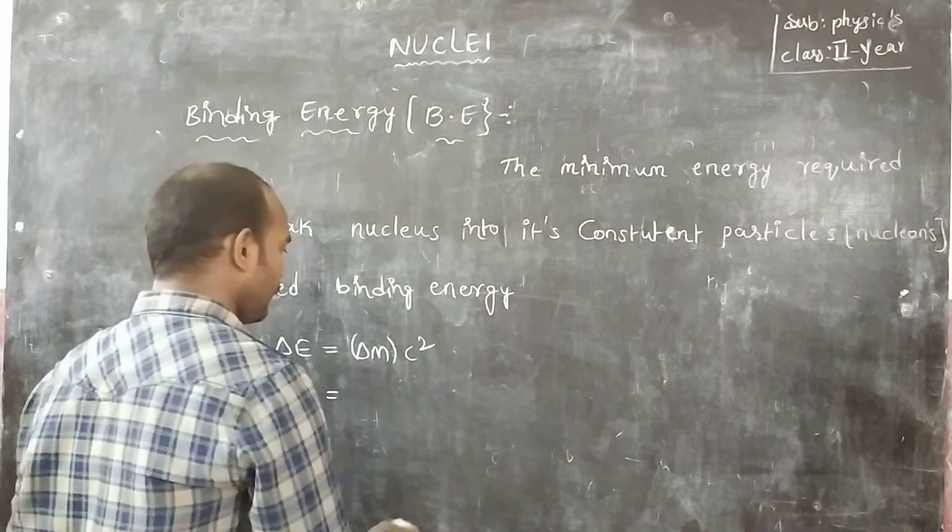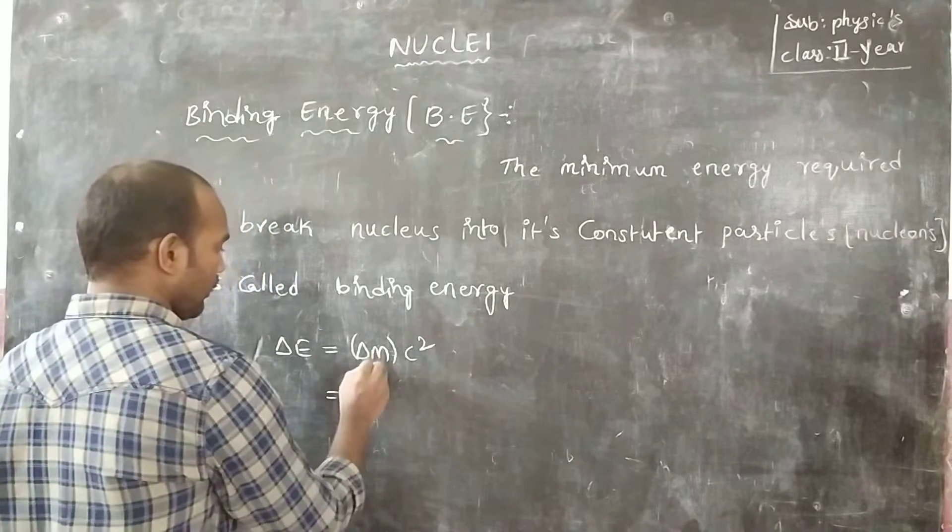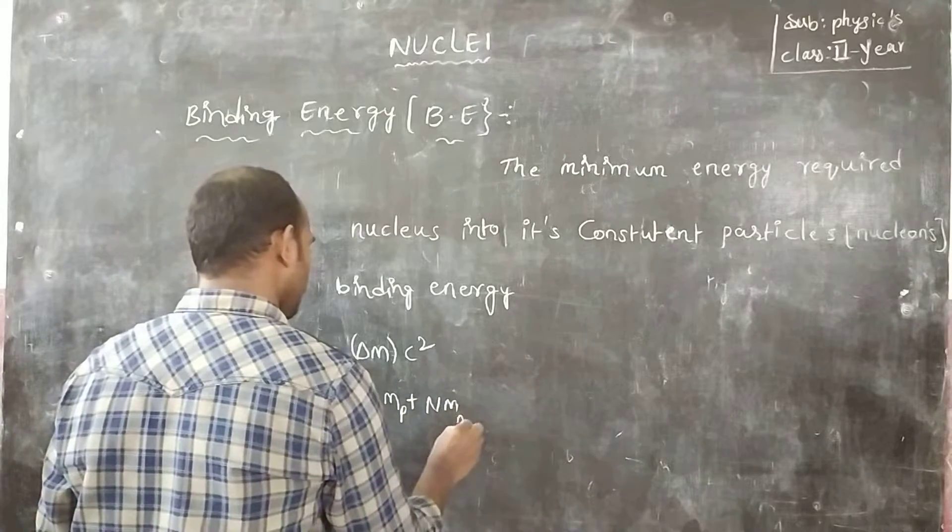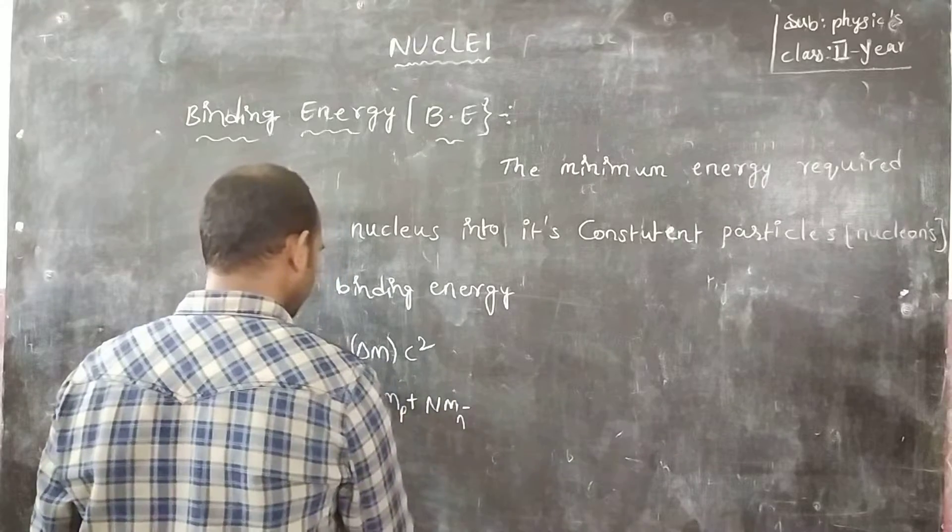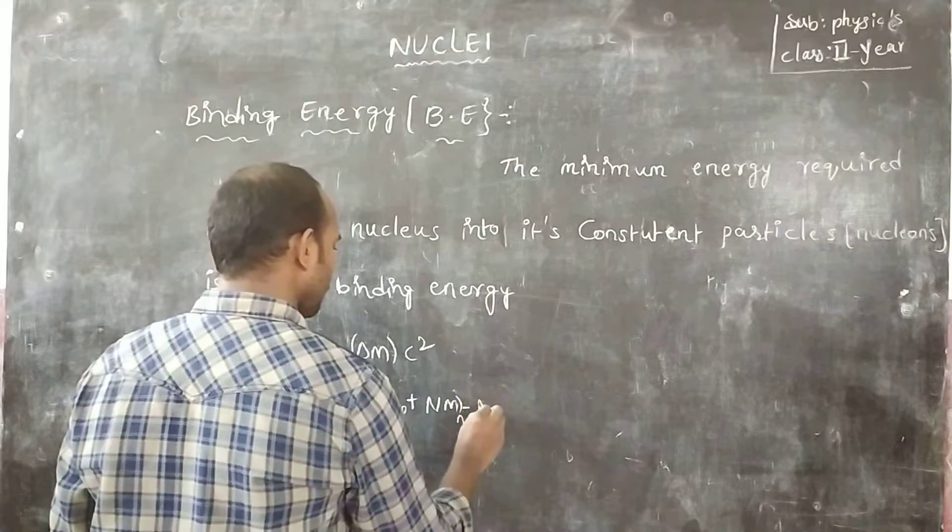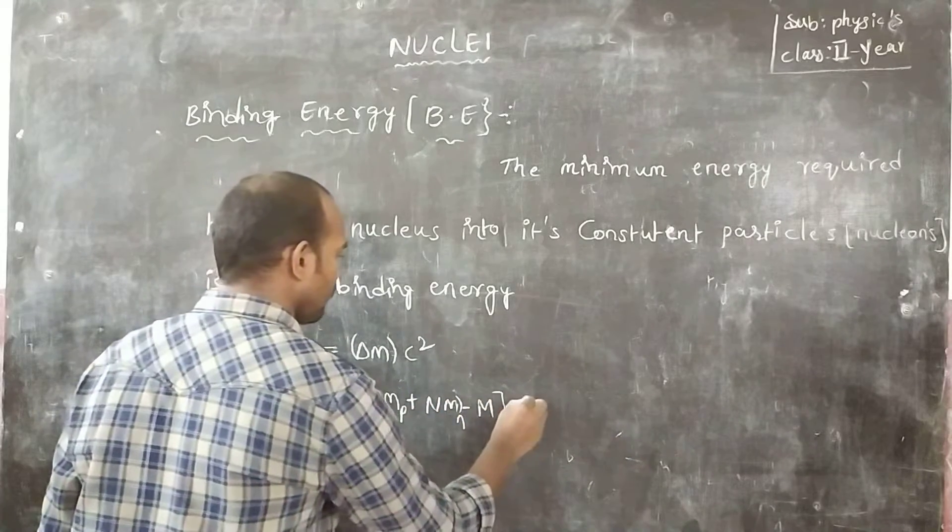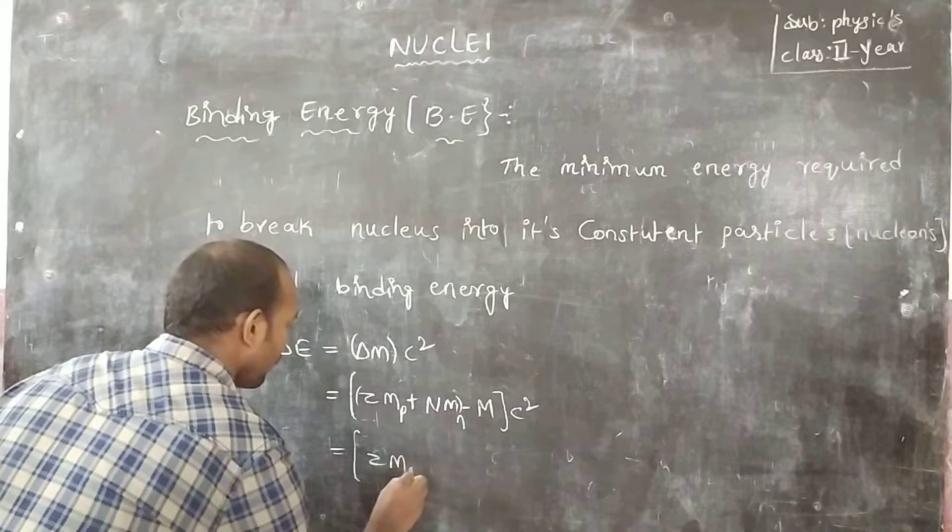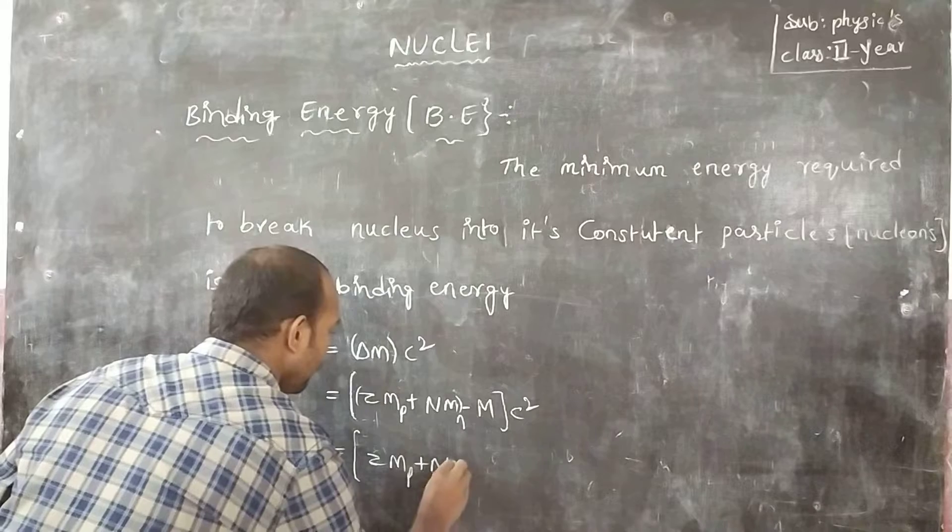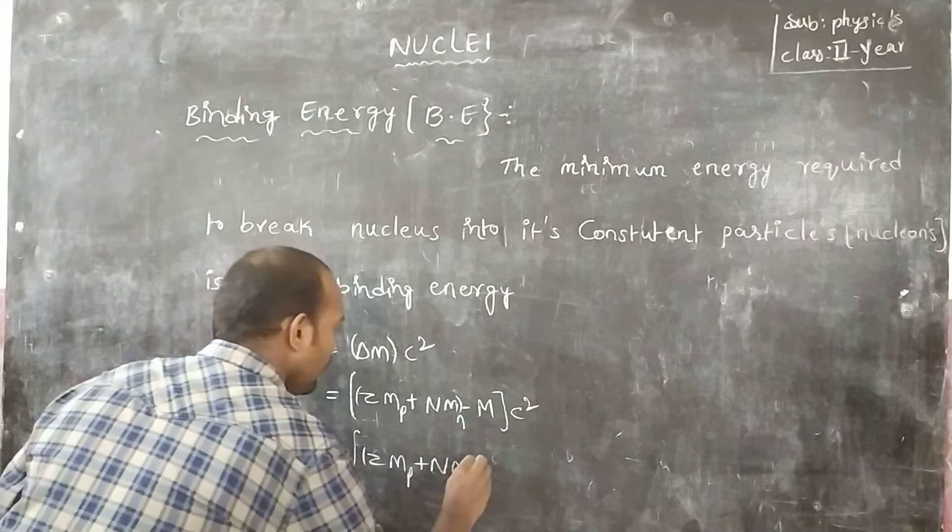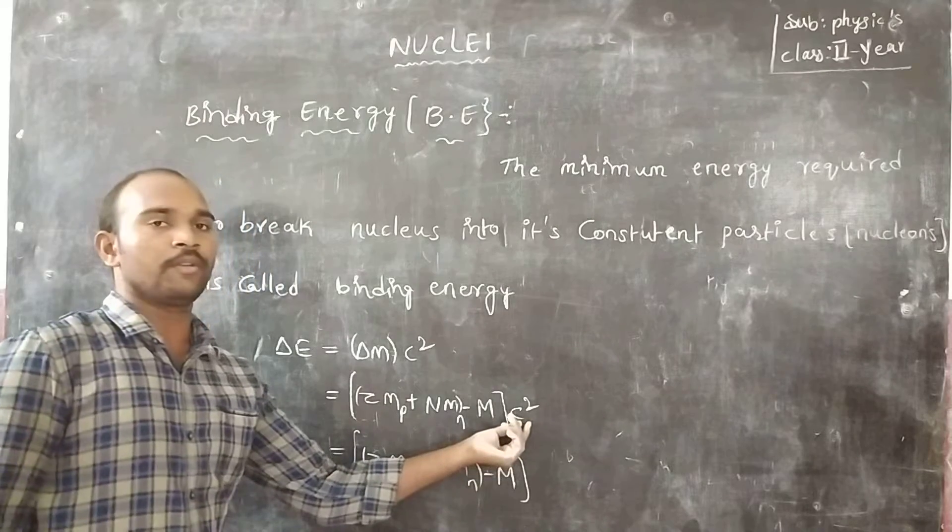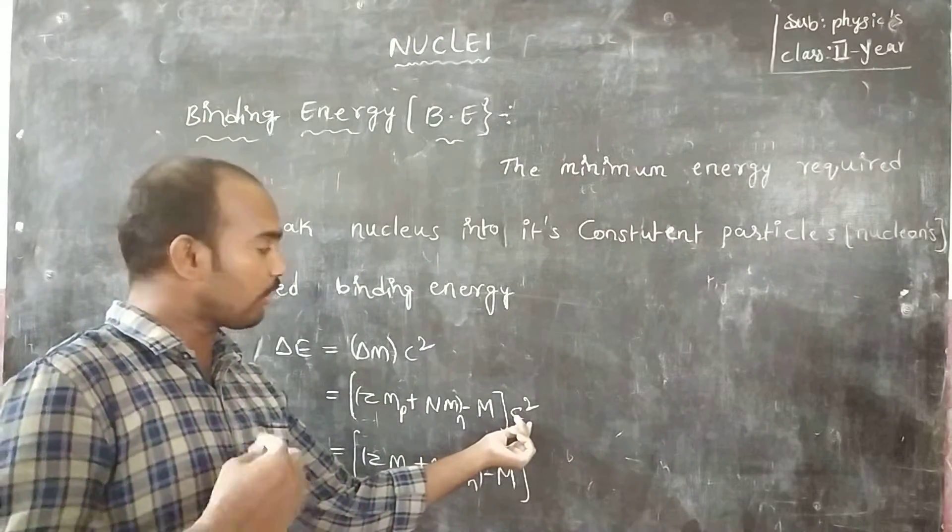Z mass of protons plus N mass of neutrons minus mass of the nucleus into C square. That is equal to Z mass of protons plus N mass of neutrons minus mass of the nucleus.